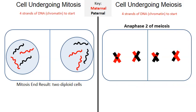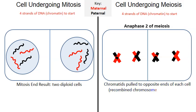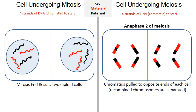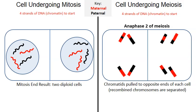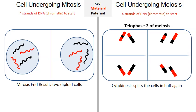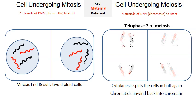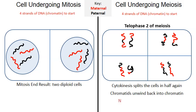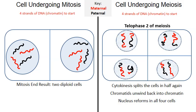In anaphase two of meiosis the spindle fibers have a tug-of-war and pull on the chromosomes so hard that the chromatids are pulled to opposite ends of the cell. As we move into telophase two of meiosis, the cytoplasm begins to divide in a process known as cytokinesis, but now two cells have been divided into four. The chromatids are unwinding back into their loose linear version of DNA known as chromatin, and the nucleus is reforming in all four of the cells.